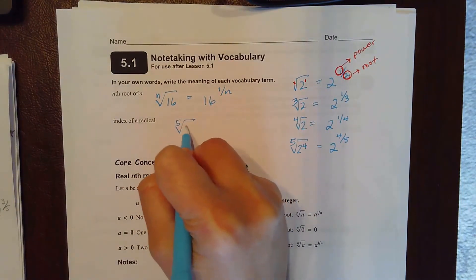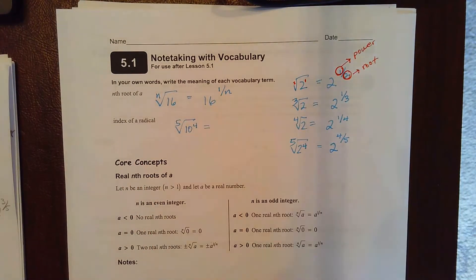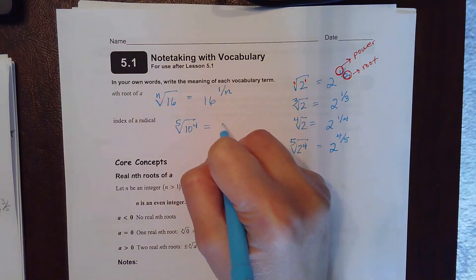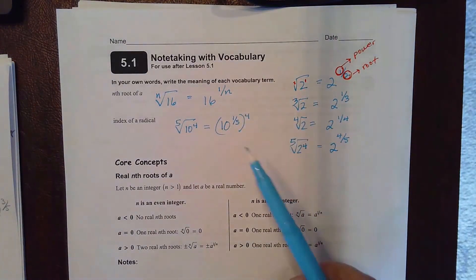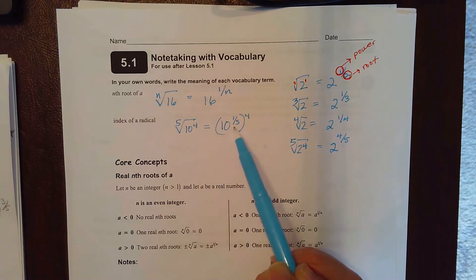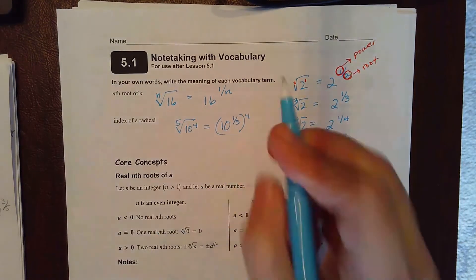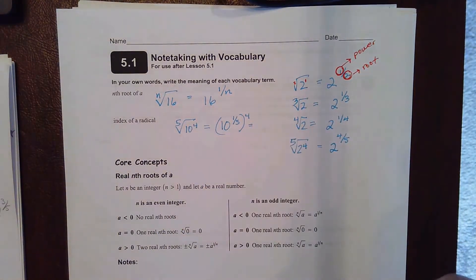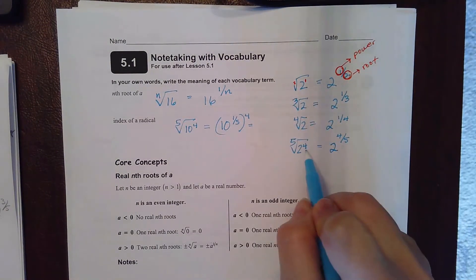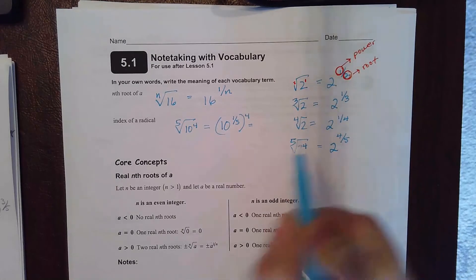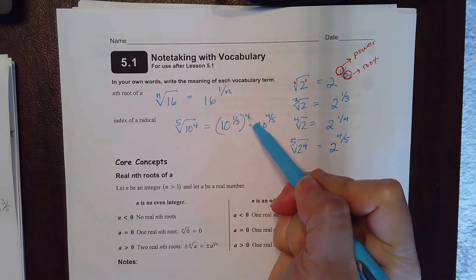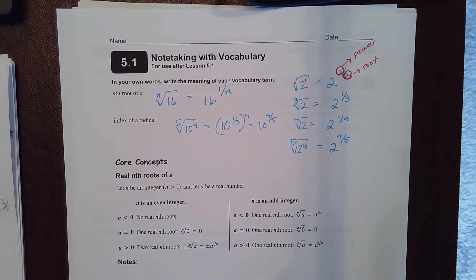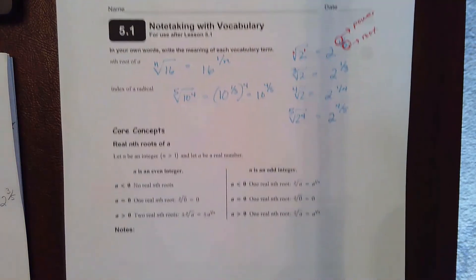Another example: the fifth root of 10 to the fourth — we could think of it as 10 to the 1/5 raised to the fourth. That means the fifth root of 10 then raised to a power of 4. This is where exponent properties come into play. Just like 2 to the 4/5, I could write this as 10 to the 4/5, because with power over root you multiply those together. Basically we want to be comfortable switching between exponent form and radical form.